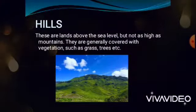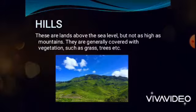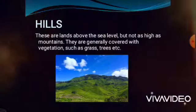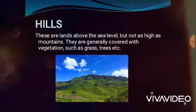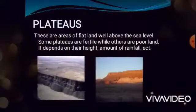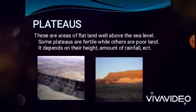Next one is hills. These are lands above the sea level but not as high as mountains. They are generally covered with vegetation such as grass, trees, etc. The basic difference between mountains and hills is their height — mountains are the highest on land and hills are not as high as mountains.